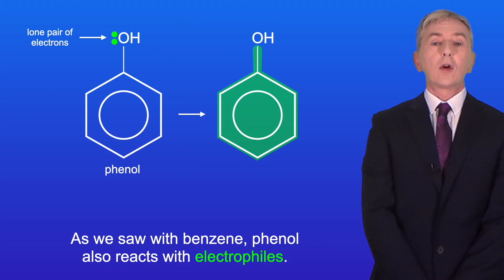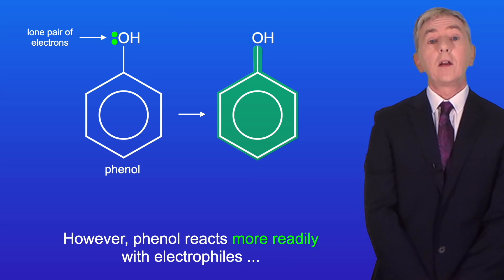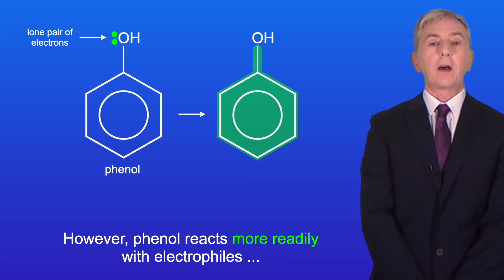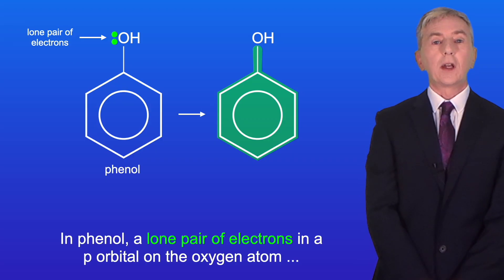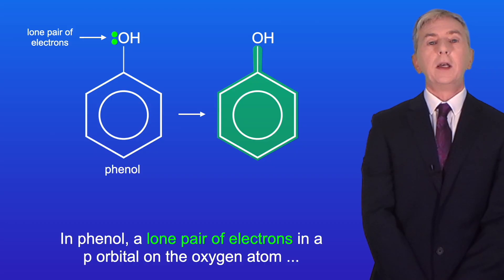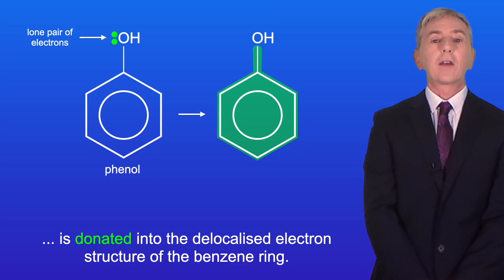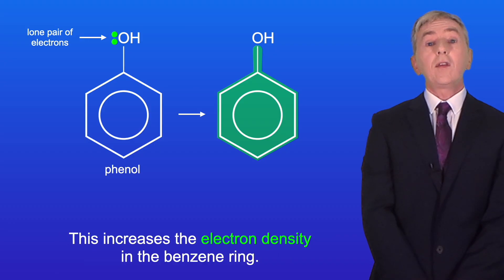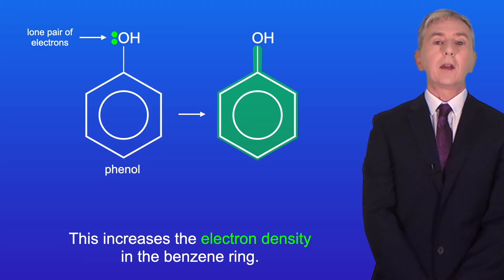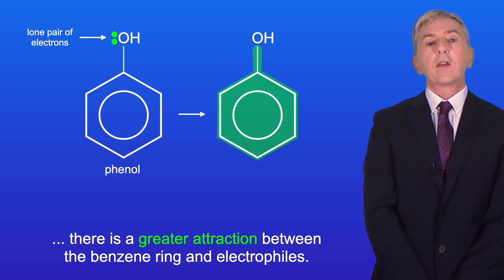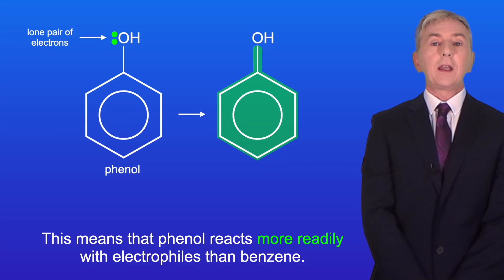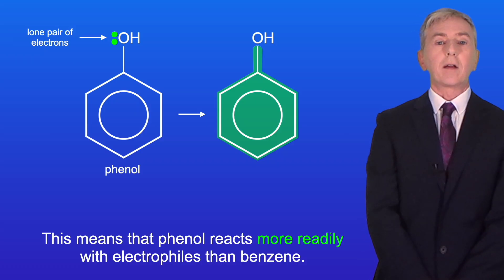As we saw with benzene, phenol also reacts with electrophiles. However, phenol reacts more readily with electrophiles than benzene. In phenol, a lone pair of electrons in a p orbital on the oxygen atom is donated into the delocalized electron structure of the benzene ring. This increases the electron density in the benzene ring, creating a greater attraction between the ring and electrophiles, so phenol reacts more readily than benzene.